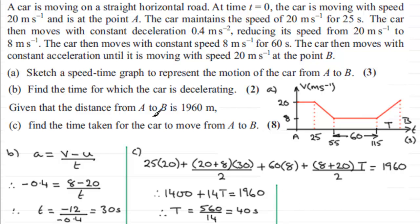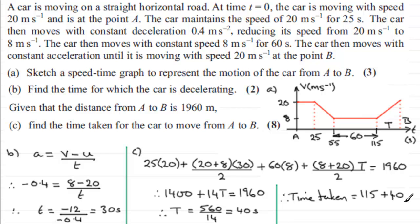So T equals 40 seconds. To find the total time for the car to move from A to B, we add the 40 seconds to the 115 seconds already accounted for. Therefore the total time taken equals 115 plus 40, which comes to 155 seconds.